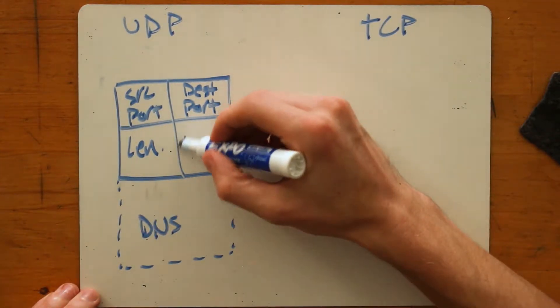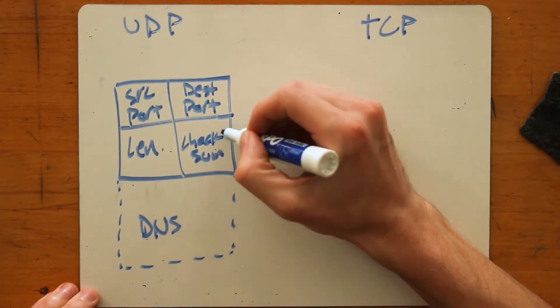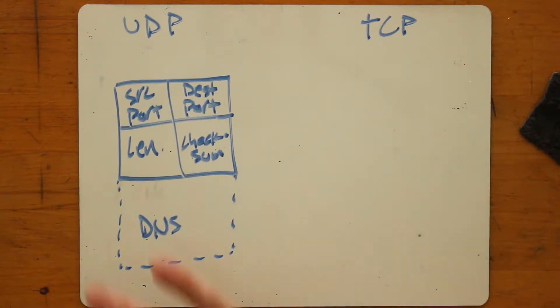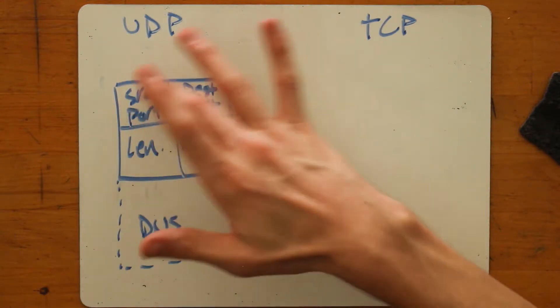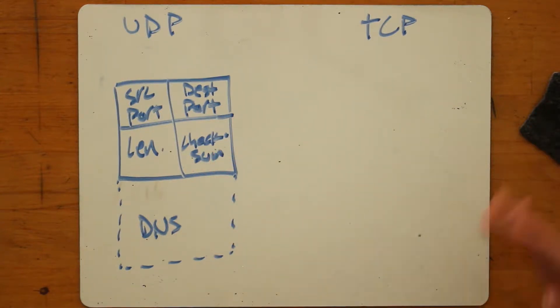And then finally, a checksum. And a checksum is a value that's computed over the entirety of these four values plus the payload data to ensure that the data that was sent was the data that was received.